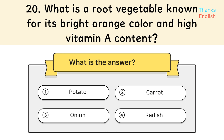Question 20: What is a root vegetable known for its bright orange color and high vitamin A content? Answer 2: Carrot.